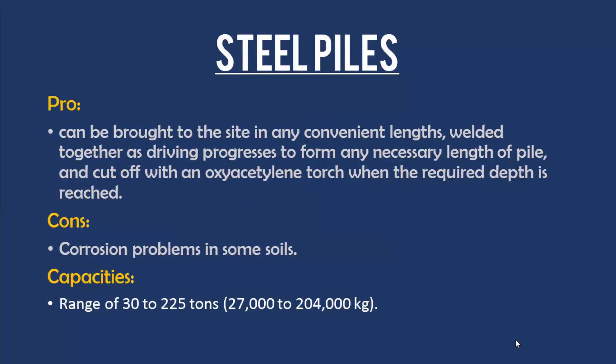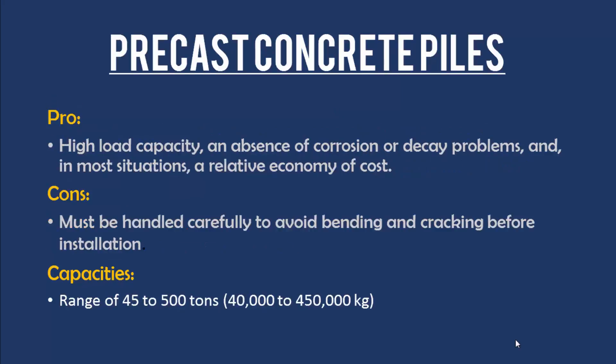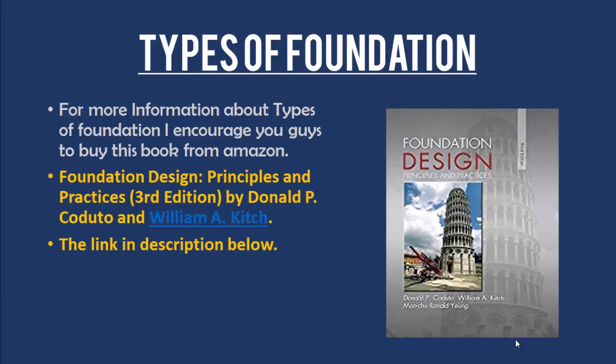Steel piles: the pros are that they can be brought to the site in any convenient length, spliced together as driving progresses to form any necessary length, and cut off with an oxyacetylene torch when the required depth is reached. The con is corrosion problems in some soils. Capacity ranges from 30 to 225 tons (27,000 to 204,000 kg). Precast concrete piles: the pros are high load capacity, absence of corrosion or decay problems, and relative economy of cost. The cons are that they must be handled carefully to avoid bending or cracking before installation. Capacity ranges from 45 to 500 tons (40,000 to 450,000 kg).